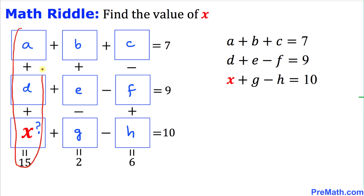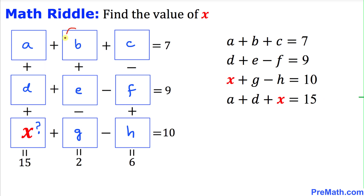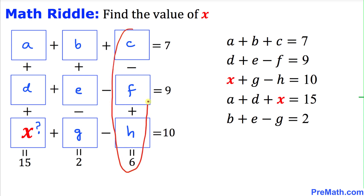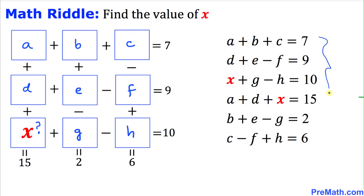Next, the three middle vertical boxes: b plus e minus g equals 10. And finally the last three vertical boxes: c minus f plus h equals 6. So we now have six equations in total, and we are going to use them to find the value of x.